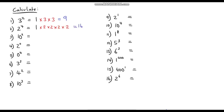Number 3: 10 to the power of 2, or another way we could say it — 10 squared. We start with 1 and multiply by 10 once, then by 10 twice. And 10 times 10 is 100.